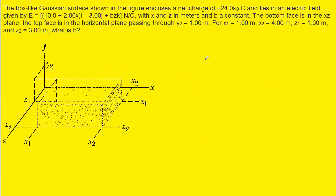If you haven't done so yet, make sure you pause the video and try to answer this question on your own first before listening on. We will begin to solve this question by considering Gauss's Law, which tells us that a constant multiplied by the total electric flux is going to equal the amount of charge enclosed by a so-called Gaussian surface.